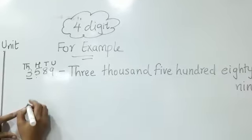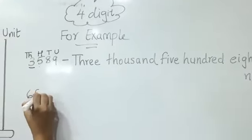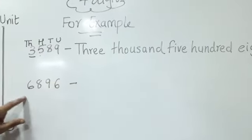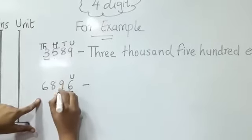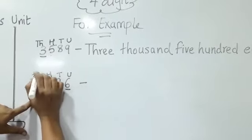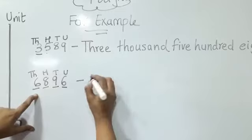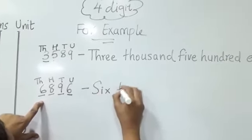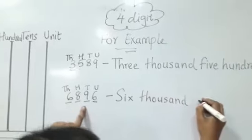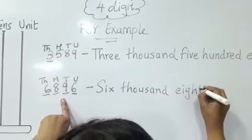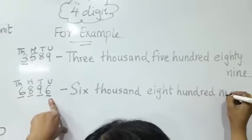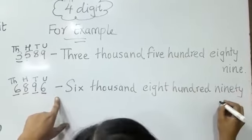Let's see another example — 6896. Here, 6 is on the unit place, 9 is on the tens place, 8 is on the hundreds place, and 6 is on the thousands place. So we write: six thousand, eight hundred, ninety six.